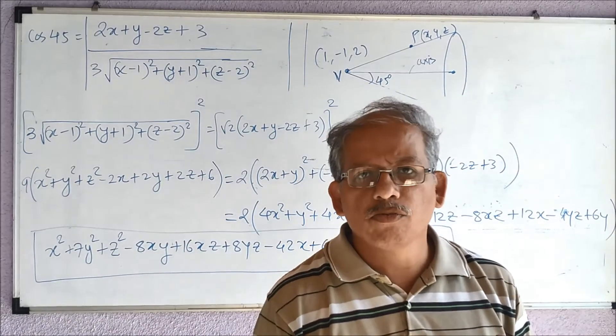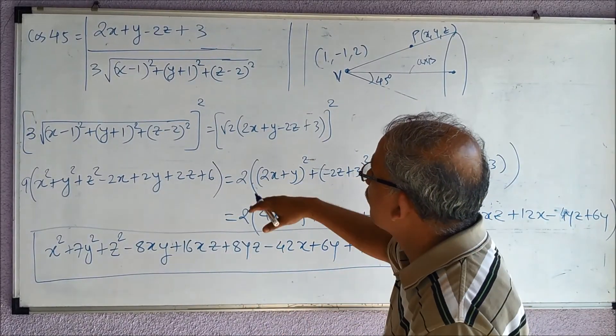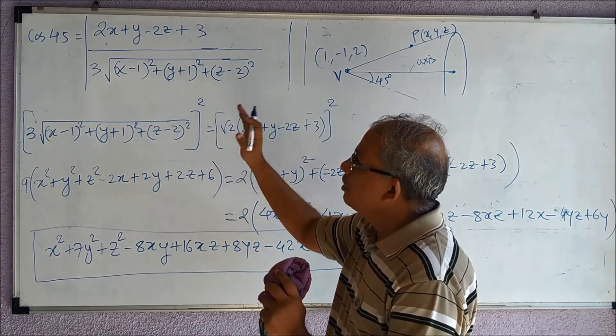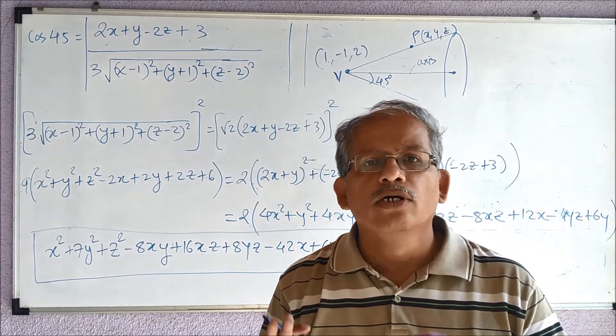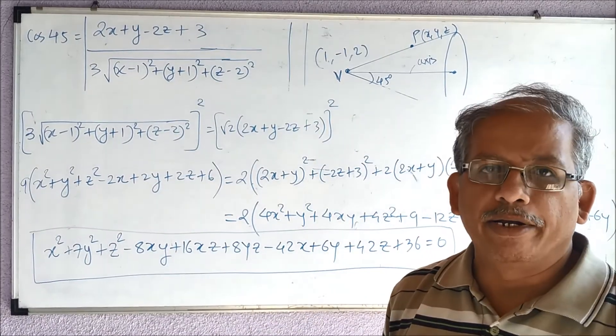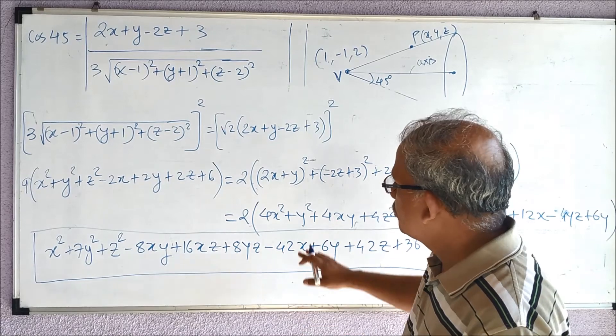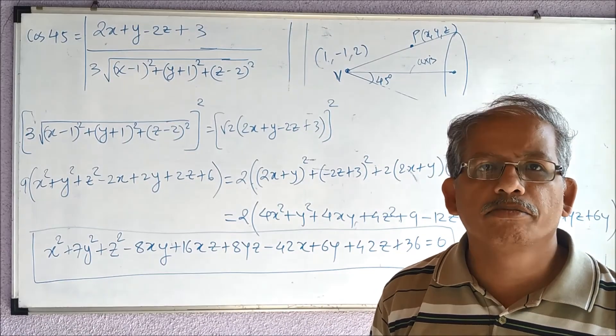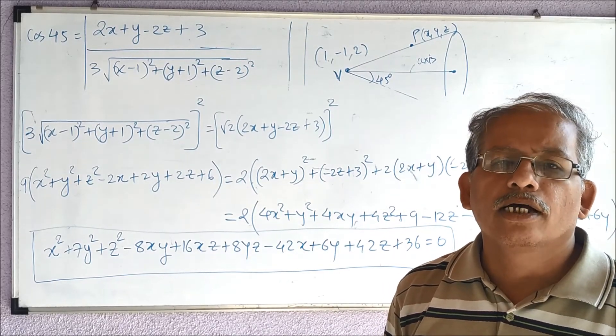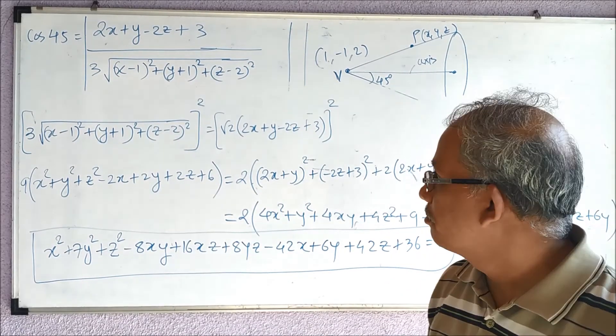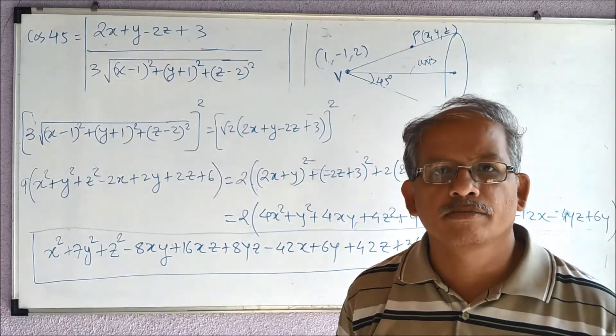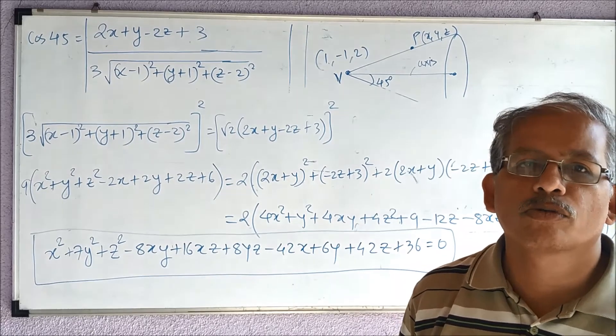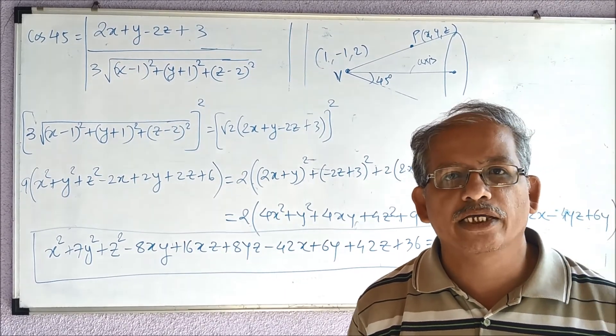It is very simple. See, what we have done is only we have written this in this format. Once the direction ratios are known, and then we cross-multiply, square, and simplify. Just the simplification is a bit lengthy part, otherwise the problem is quite easy. Try some more exercises, and we will see some more problems in the next video. Thank you.